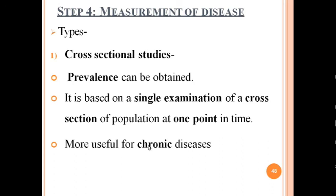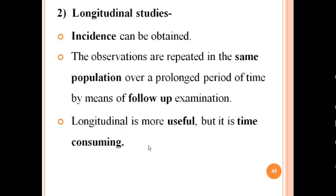Measurement of disease depends on the type of study. In cross-sectional studies, prevalence can be obtained — based on a single examination of a cross-section of the population at one point in time, it is more useful for chronic diseases. In longitudinal studies, incidence can be obtained — observations are repeated in the same population over a prolonged period by means of follow-up examinations. Longitudinal studies are more useful but also more time-consuming.